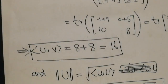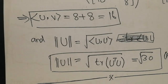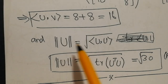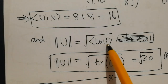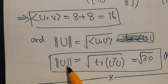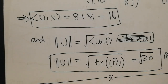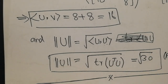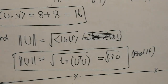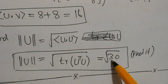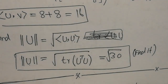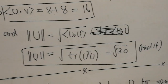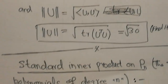For matrices, the norm of U is the square root of the inner product of U with itself — that is √(trace(UᵀU)). You can solve it yourself; it works out to √30. I'll leave that for you to verify.